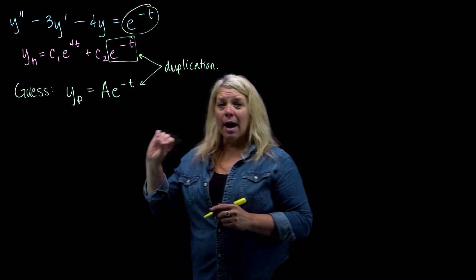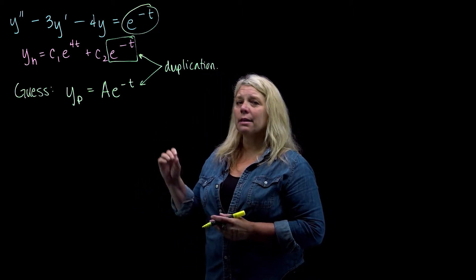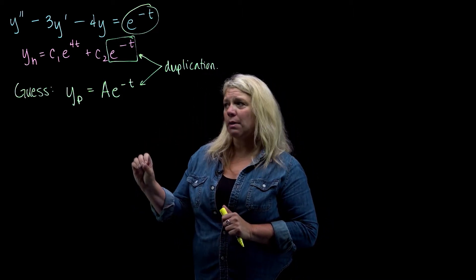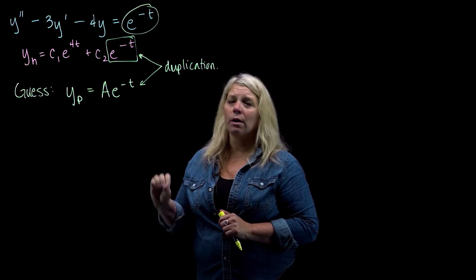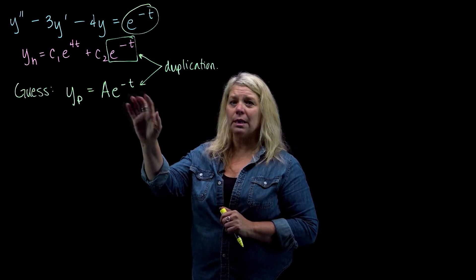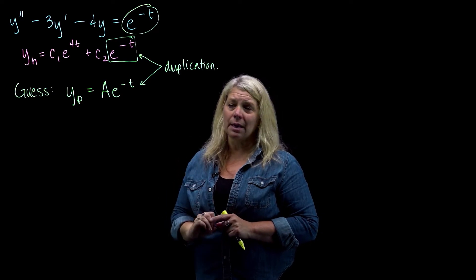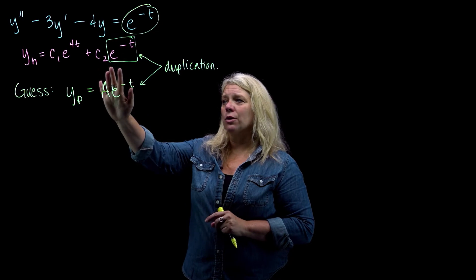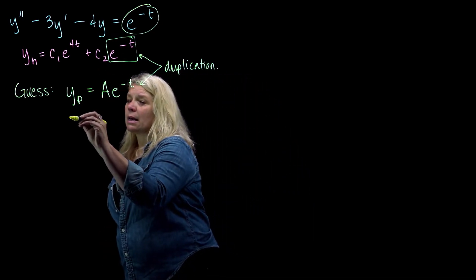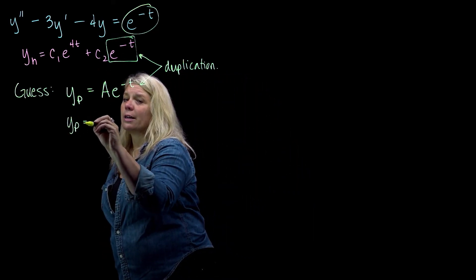So if you look back at your notes, what it says is that you want to multiply your guess by the smallest power of the independent variable t, smallest power of t, that makes this function avoid duplication. So in this case, I'm going to multiply my guess by just t.